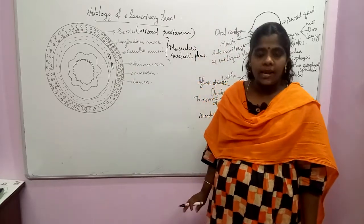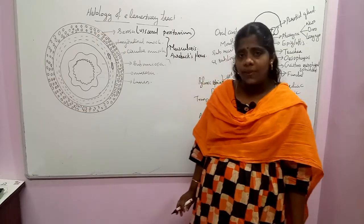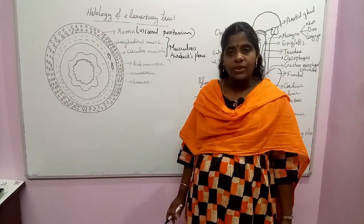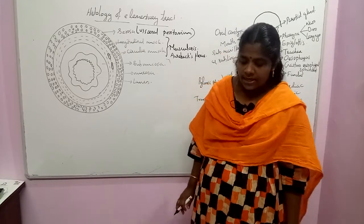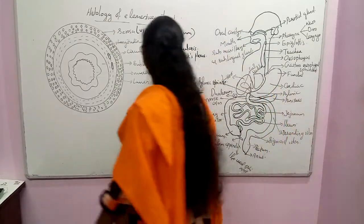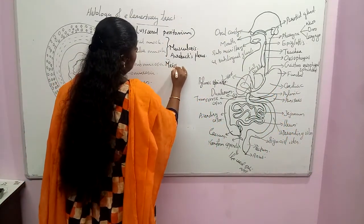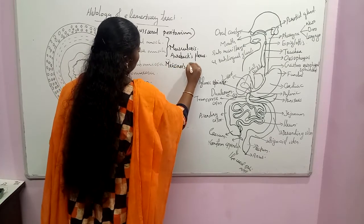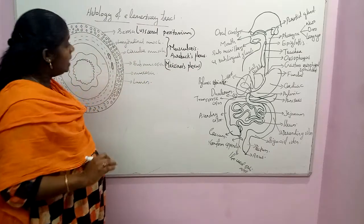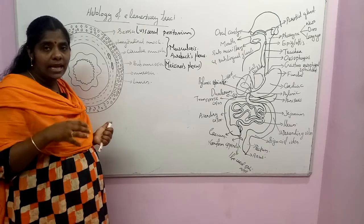The next layer is the submucosal layer. It contains blood capillaries as well as nerve fibers. The nerve fibers supplied to this region are called Meissner's Plexus. This is located in the submucosal layer.